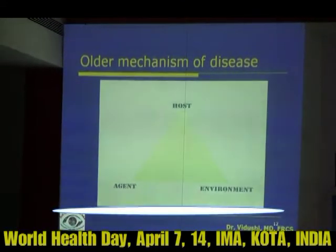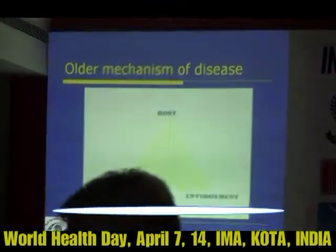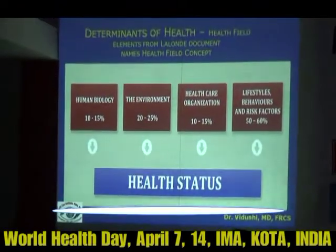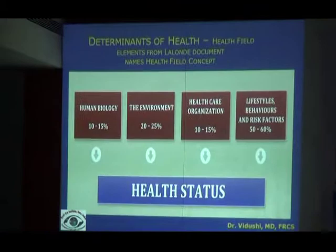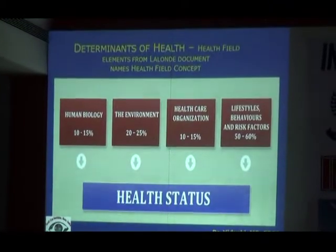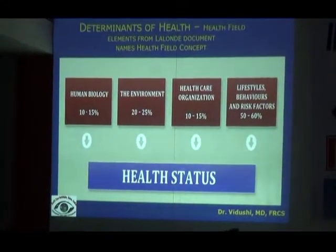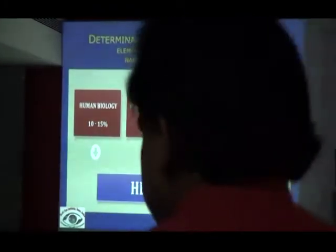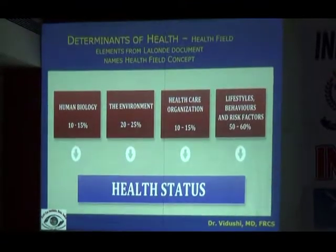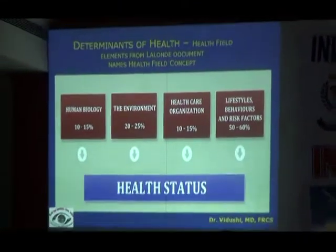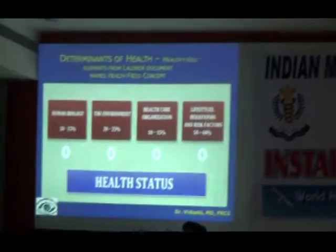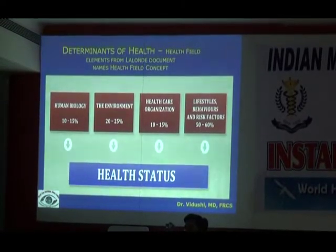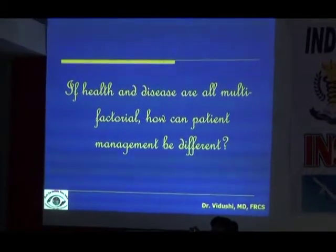The older mechanism of disease was simple: host, agent, and environment — the disease triangle. However, these concepts are evolving. The Lalonde document defines health field elements where different factors play different roles in disease causation: human biology including genetic makeup and susceptibility, the environment, healthcare organization and access, preventive healthcare, and lifestyle behaviors and risk factors. All these together determine the health status of an individual. Just as the definition of health is evolving, the concept of disease causation is also evolving — multifaceted and multifactorial.